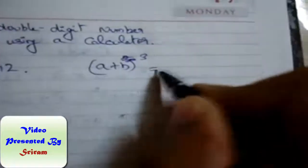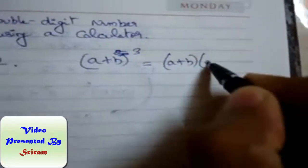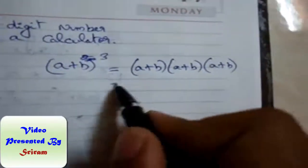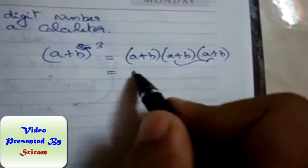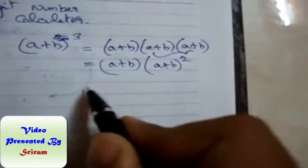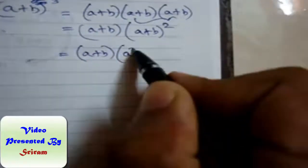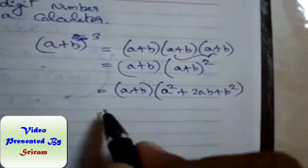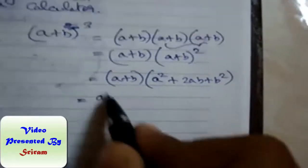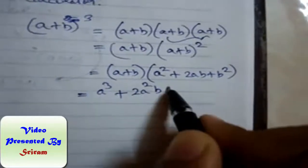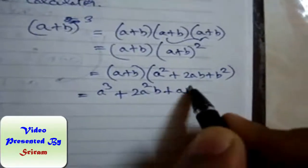The whole cube is (a + b)(a + b)(a + b), and these two can be combined together as (a + b) into (a + b) the whole square. (a + b)² is a² + 2ab + b². Now multiplying these both, we get a³ + 2a²b + ab² + a²b + 2ab² + b³.